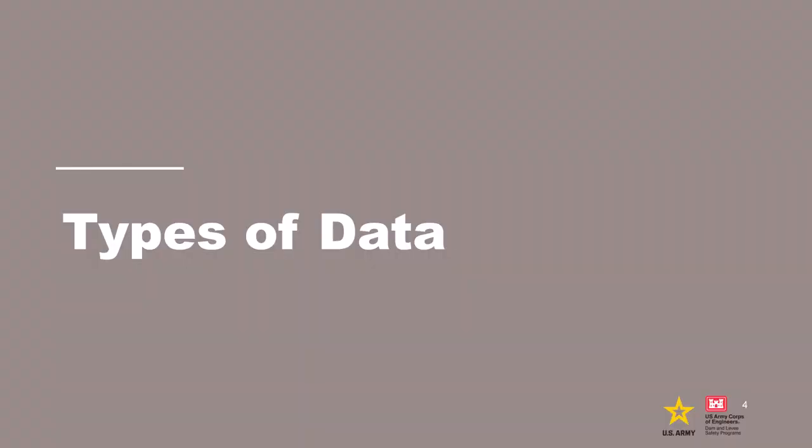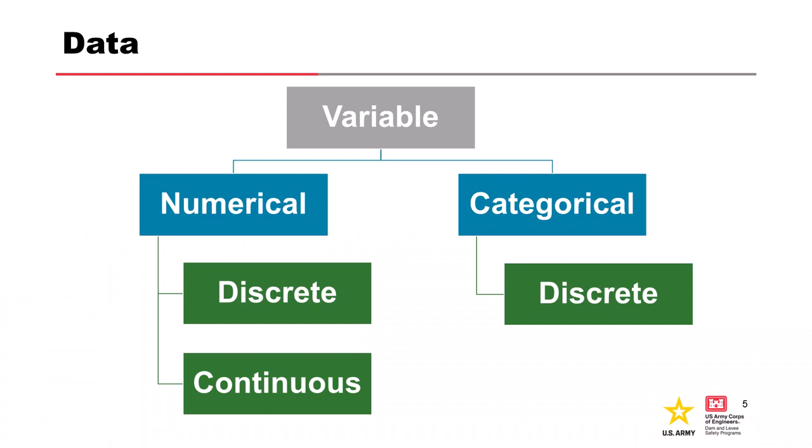Let's start with different types of data. This is introductory and fundamental, but it is a key building block for risk analysis. Data is the result of observing or measuring some quantitative or qualitative characteristic of a variable — that could be annual maximum flood stage, strength properties for soil that levees are built out of, or a measure of erodibility of some material. We're either observing or measuring it in some quantitative or qualitative way.